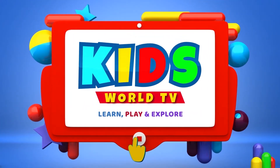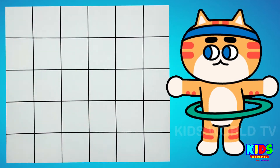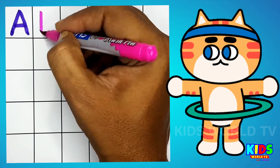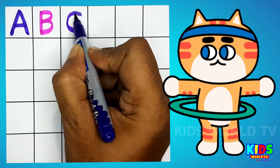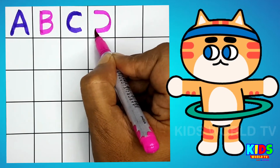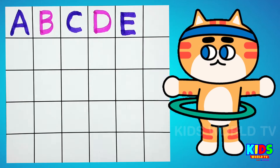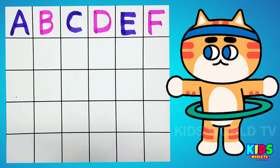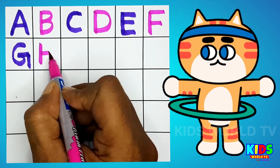Kids World TV. A for Apple, B for Bone, C for Kid, D for Dog, E for Elephant. F for Fish, G for Grapes, H for House.